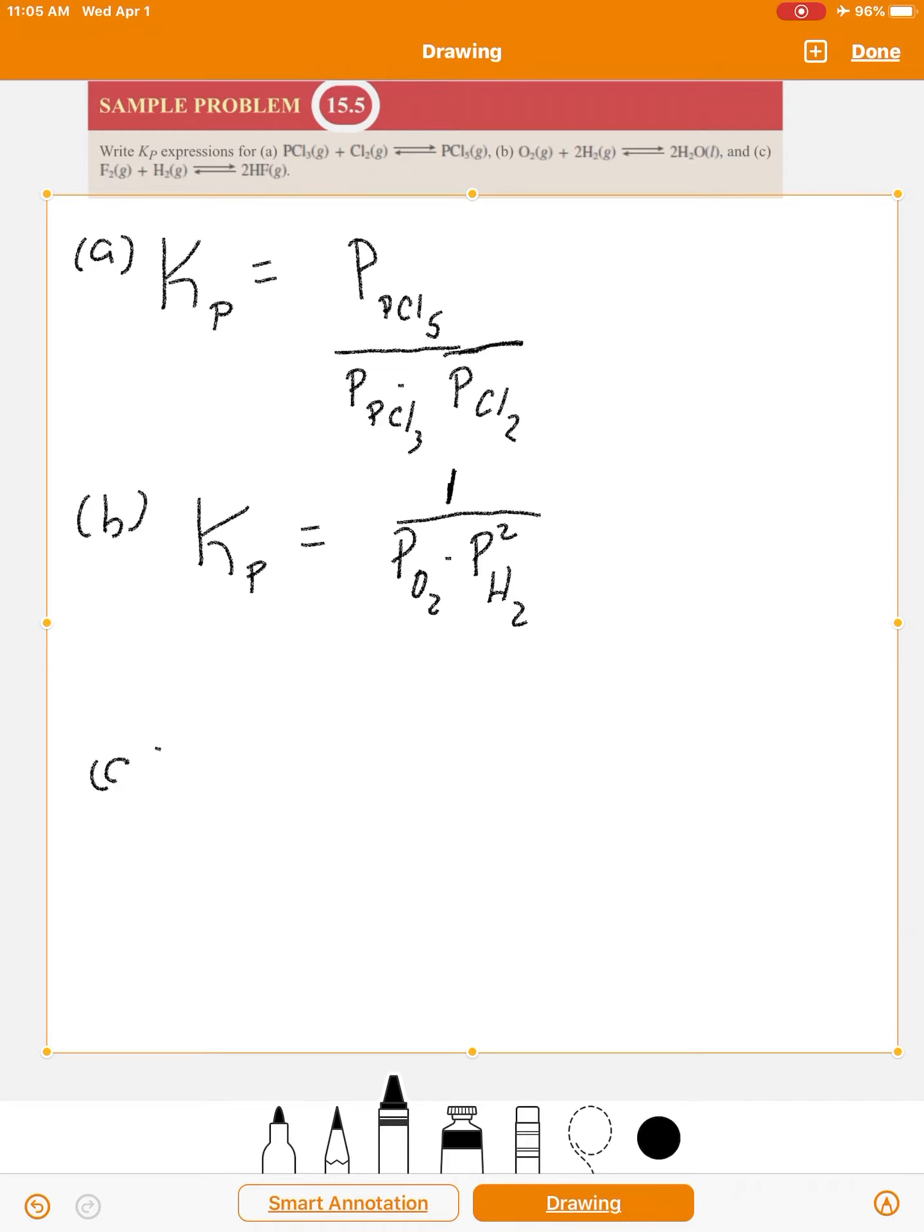And then C, Kp is equal to the pressure of HF. That's a gas, so pressure of HF. It's a coefficient of 2, so you square it, divided by the pressure of F2, divided by pressure of H2.